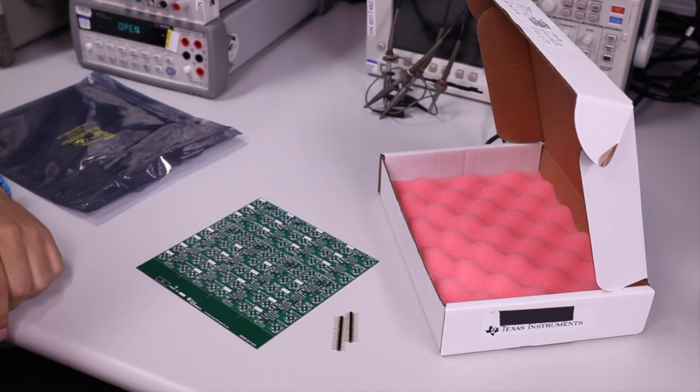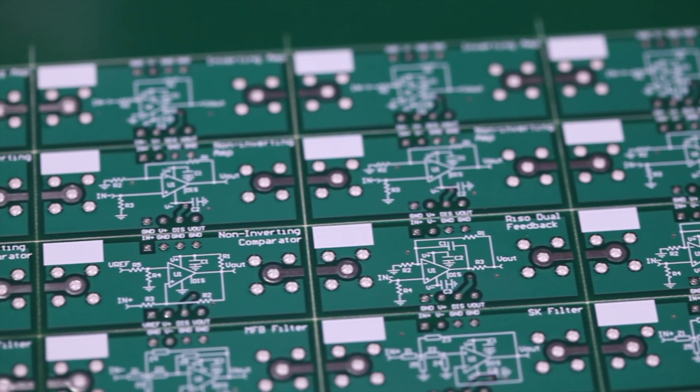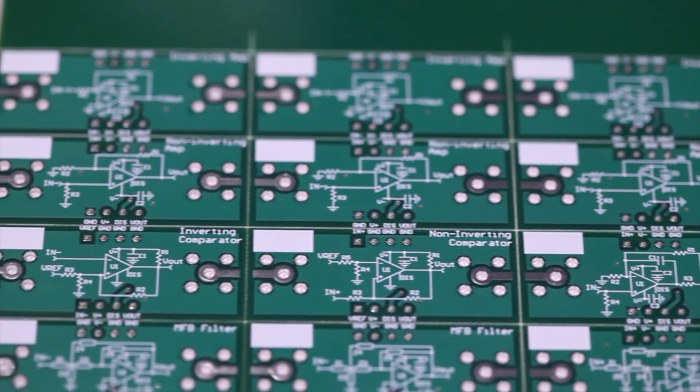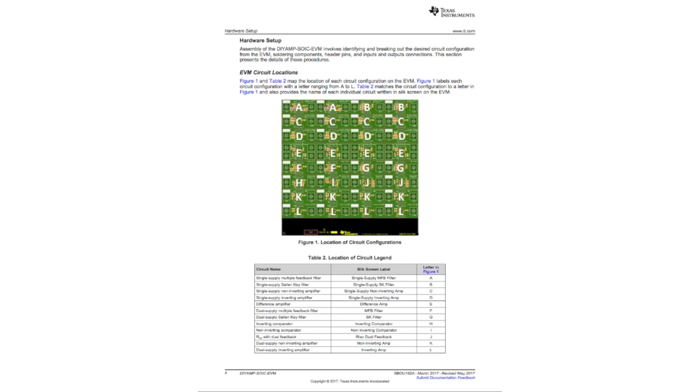The coupon boards include 12 common amplifier configurations, such as non-inverting, inverting, difference amplifier, filters, and comparators. Be sure to check out the circuit locator diagram in the user's guide so you can quickly identify the location of each circuit configuration on the EVM.